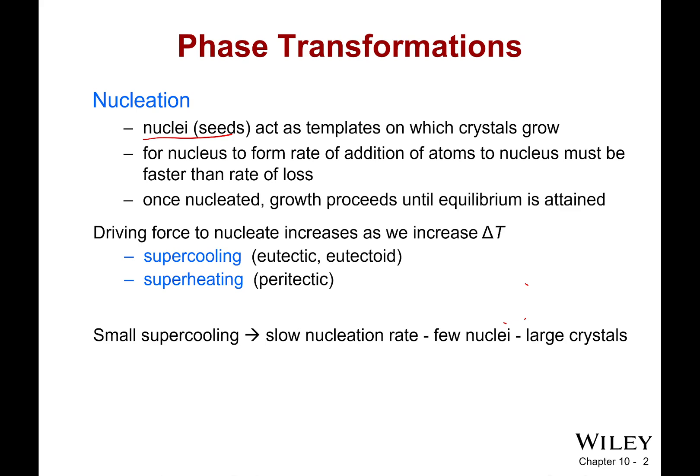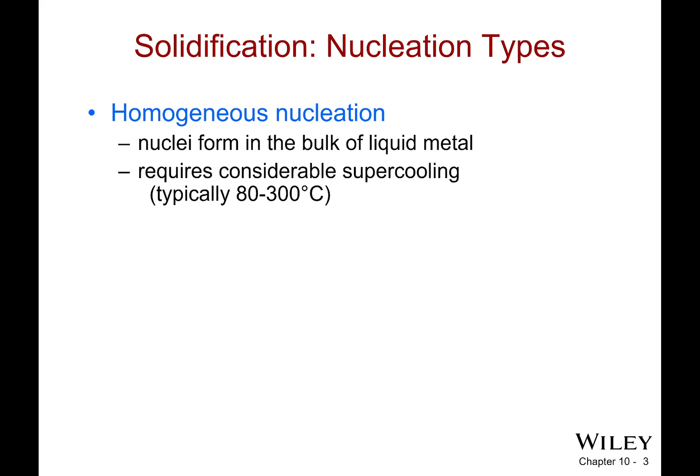As you might guess, if you have a small supercooling, well, guess what? You're going to have a slow nucleation rate. Since you have a slow nucleation rate, you're going to have few nuclei, and you're going to have very large crystals. If you have very fast supercooling, you'll have a rapid nucleation rate, many nuclei, and therefore very small crystals. And this is important. Why? Well, we'll find out later. But just know that how many crystals you have and how large they are is very important to the overall strength and ductility of your metal.